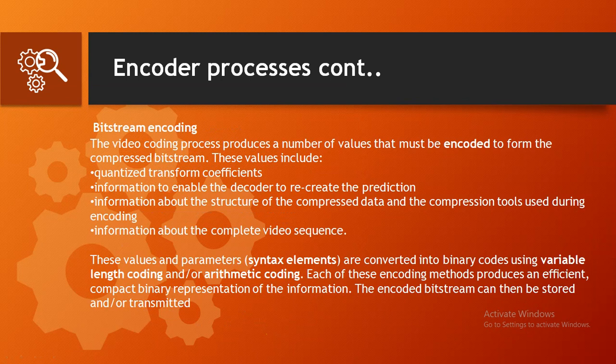The video coding process produces a number of values that must be encoded to form the compressed bit stream. These values include quantized transform coefficients, information to enable the decoder to recreate the prediction, information about the structure of the compressed data and compression tools used during encoding, and information about the complete video sequence. These values and parameters are converted into binary codes using variable-length coding or arithmetic coding, each producing an efficient, compact binary representation of the information. The encoded bit stream can then be stored and transmitted.